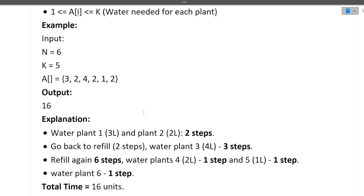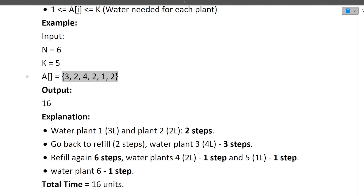Let's see quickly with the help of an example. We are given n equal to 6 — this is the watering capacity of 6 plants — and k equal to 5, which is the watering capacity of the can. The output is 16. So with k equal to 5, the first plant requires 3 liters of water. The can has 5 liters, so k becomes 2 and time becomes 1. Moving to plant 2, it has capacity 2 liters, so k becomes 0 and time becomes 2.